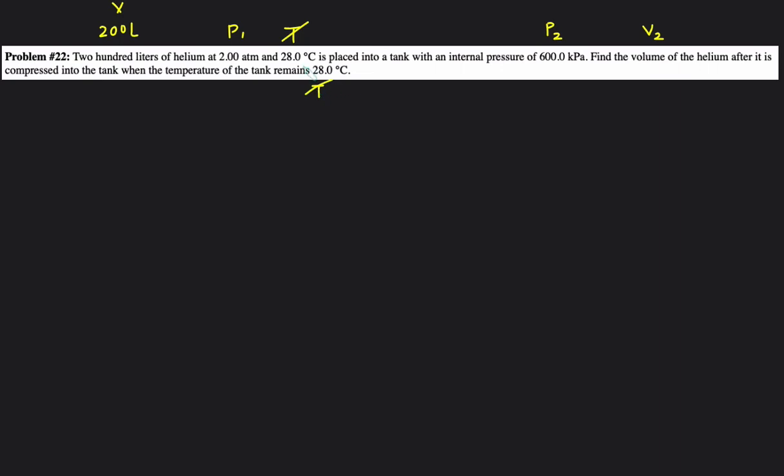So we'll just ignore that. So anything that stays the same you can just ignore it. So that means we're just dealing with volume and pressure. So once again we're using Boyle's law P1 V1 equals P2 V2.